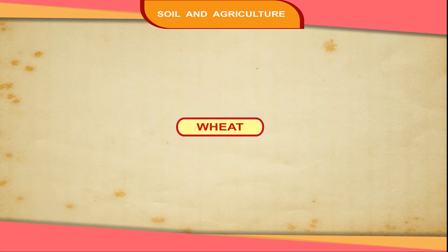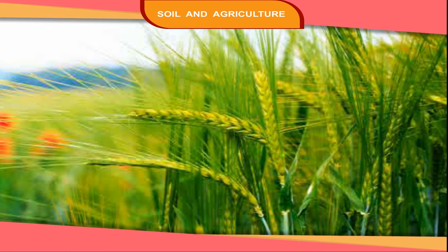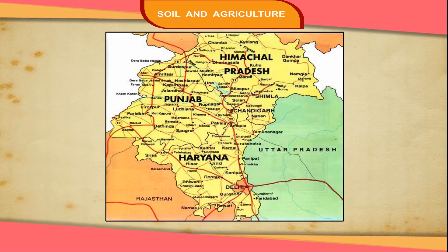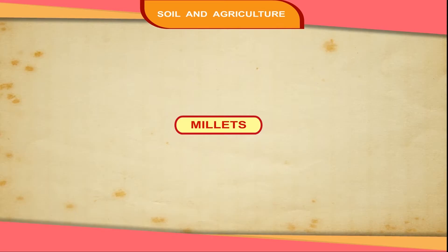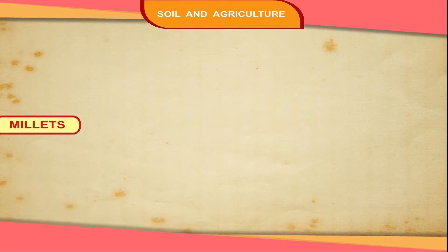Wheat is the main food crop of the people of northern and northwest India. It is mainly grown in Punjab, Haryana, Uttarakhand, Uttar Pradesh, Madhya Pradesh and Chhattisgarh.